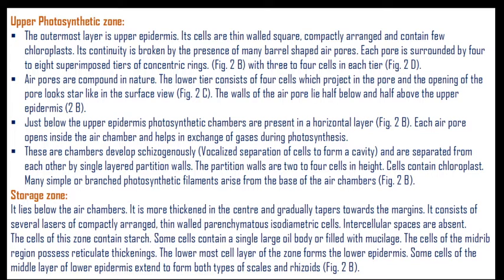The upper photosynthetic zone has an outermost layer of upper epidermis. Its cells are thin-walled, squarish, compactly arranged, and contain few chloroplasts. It is continuously broken by the presence of many barrel-shaped air pores. Each pore is surrounded by four to eight superimposed tiers of concentric rings, with three to four cells in each tier. Air pores are compound in nature. The lower tier consists of four cells which project into the pore, and the opening looks like a star in surface view. The walls of the air pore lie half below and half above the epidermis.